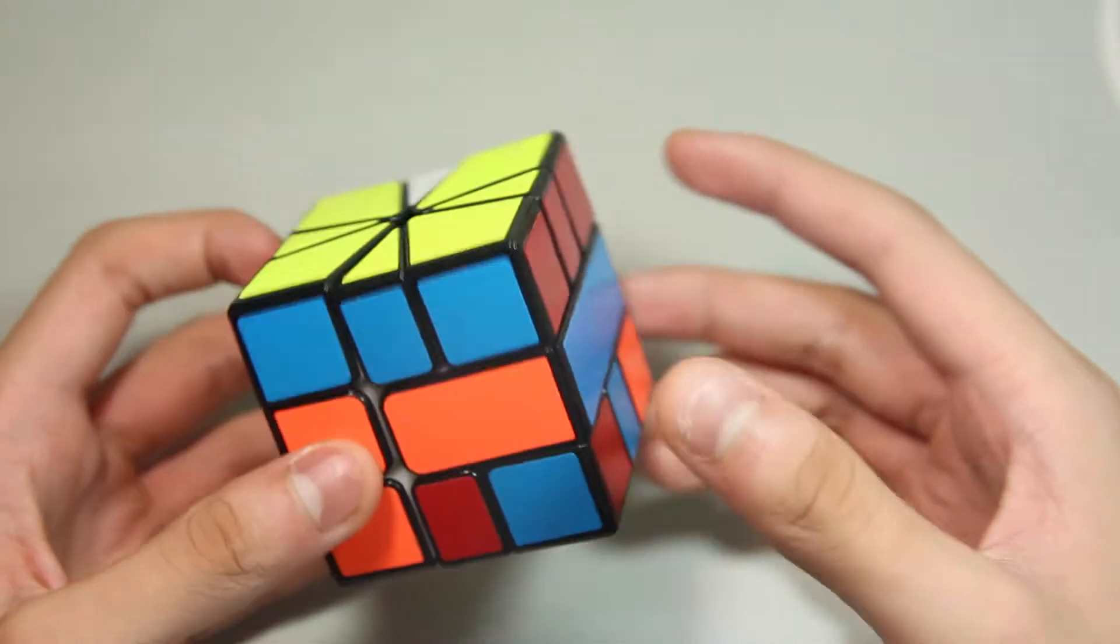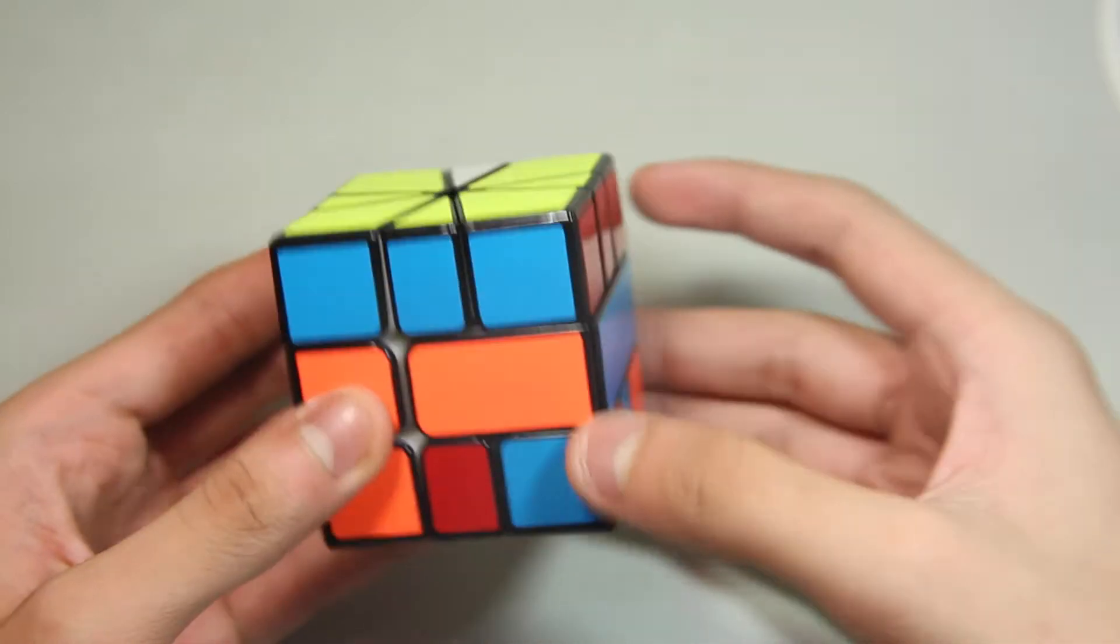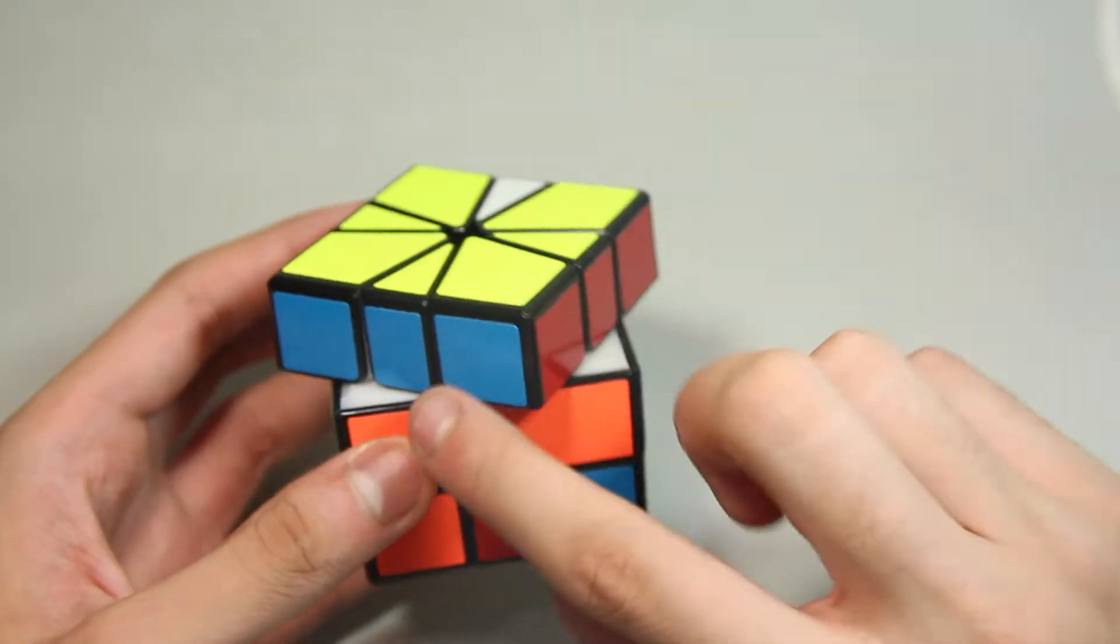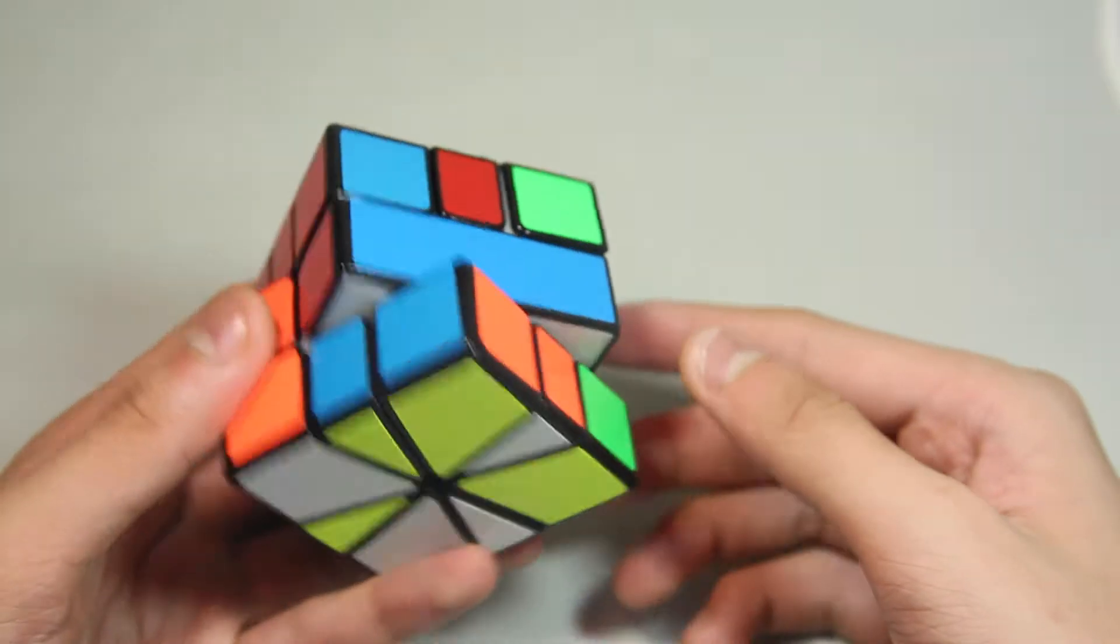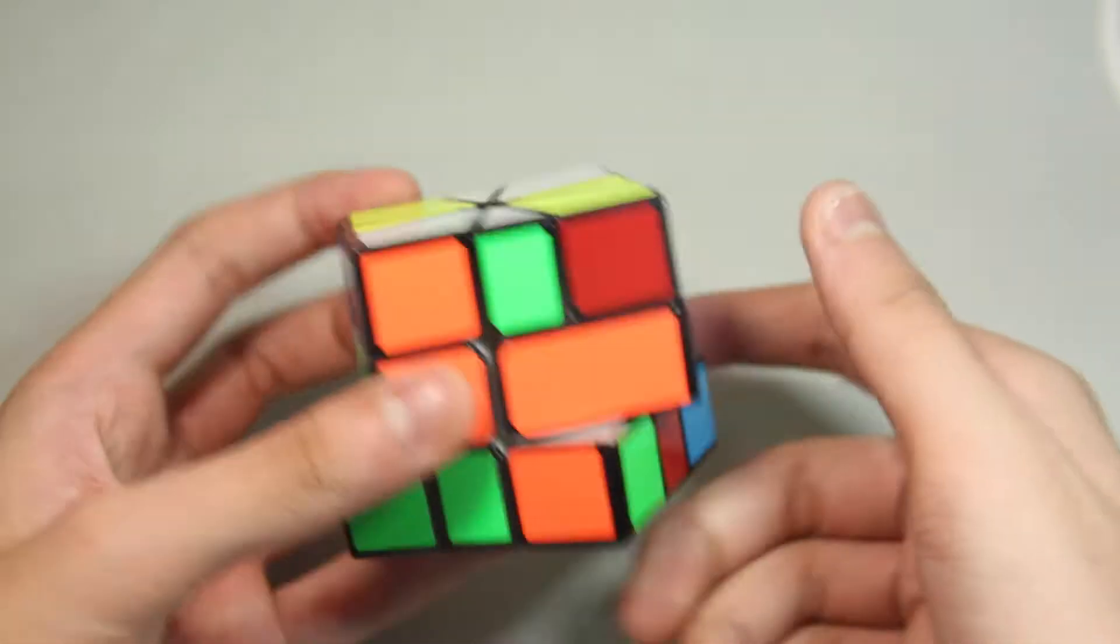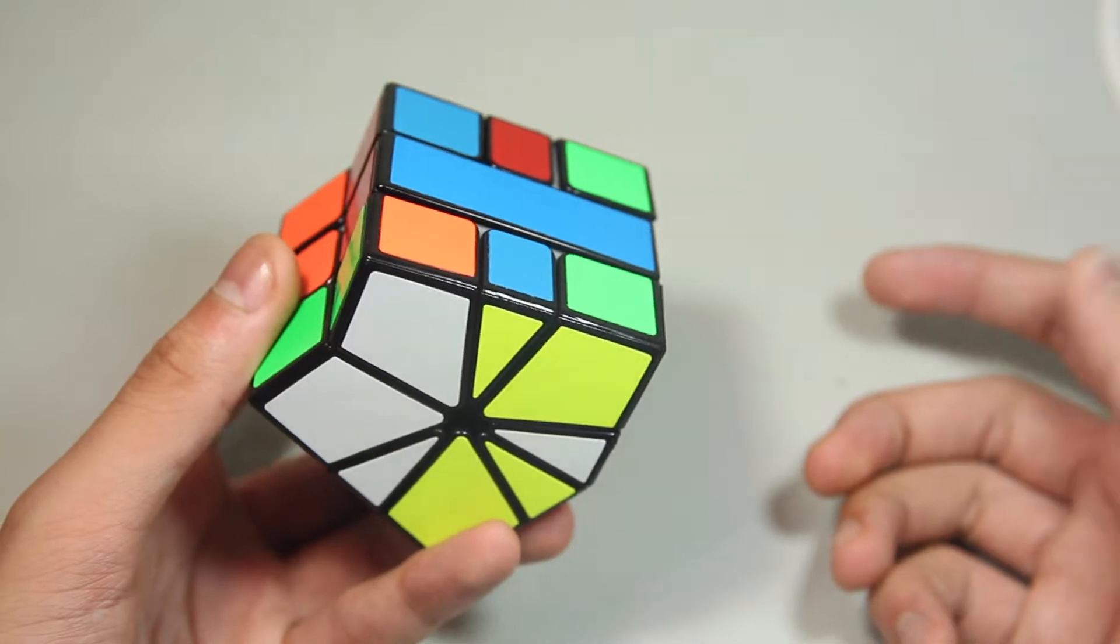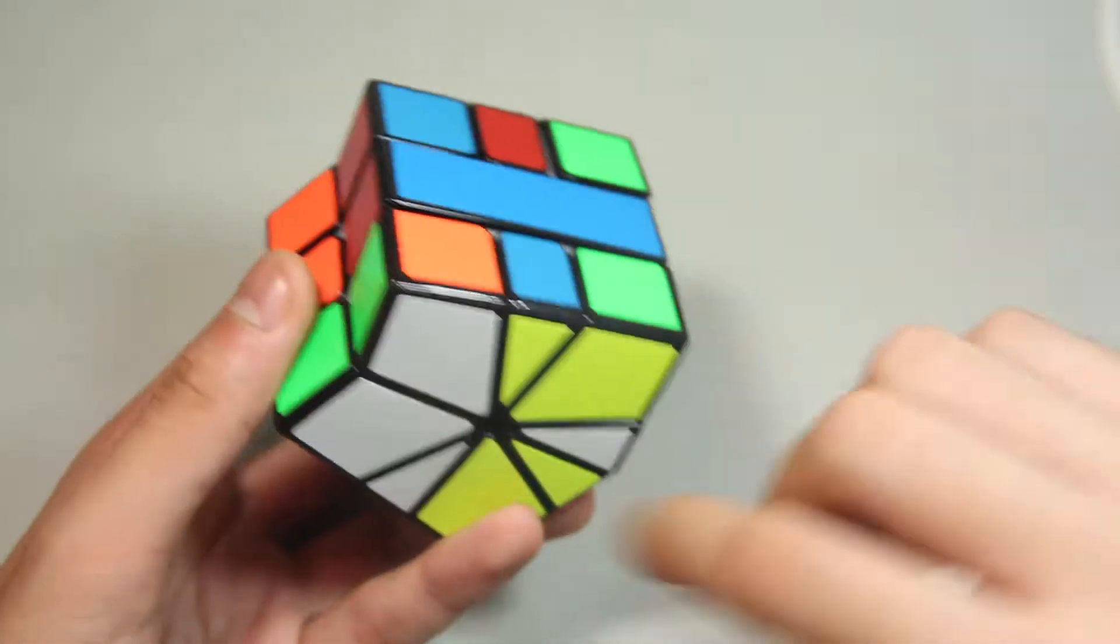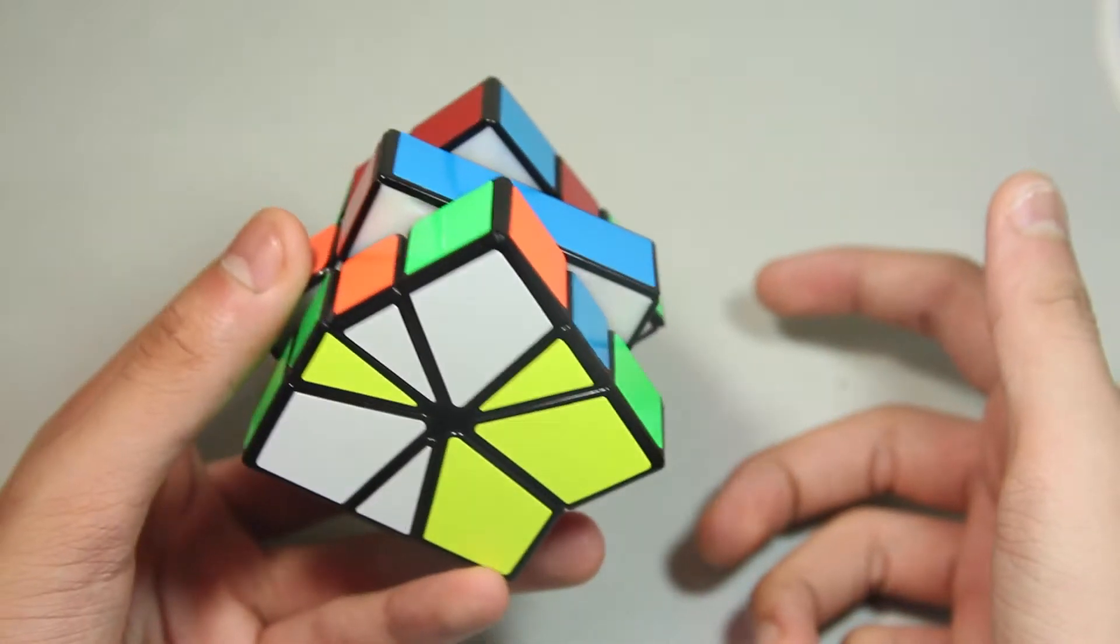When you do corner orientation, you will always have to misalign the layer by one or negative one. If you just misalign by one, it will still stay in a cube shape, or negative one, it will still stay in a cube shape. But if you have no layer misaligned, you'll change the cube shape into a kite kite. And if you have both of them misaligned, same thing.